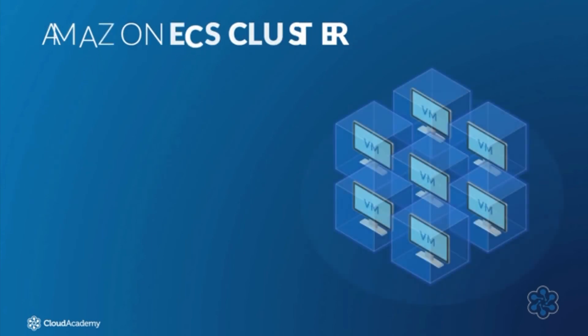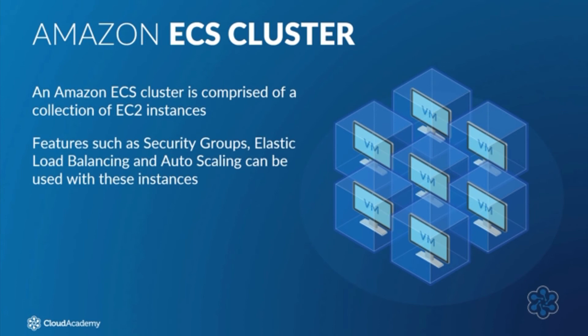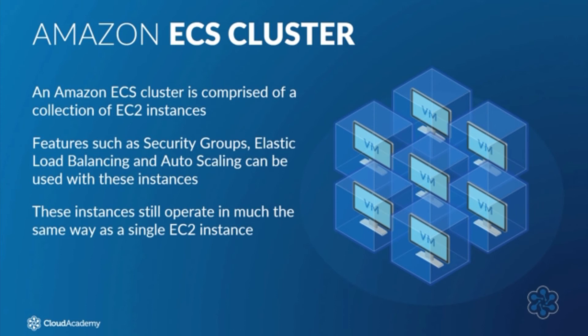An Amazon ECS cluster is comprised of a collection of EC2 instances. As such, some of the functionality and features already discussed in this course can be used with these instances — for example, security groups to implement instance-level security at a port and protocol level, along with elastic load balancing and auto-scaling. Although these EC2 instances form a cluster, they still operate in much the same way as a single EC2 instance.